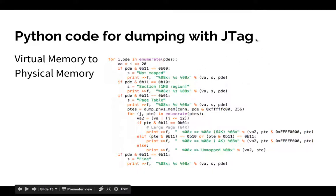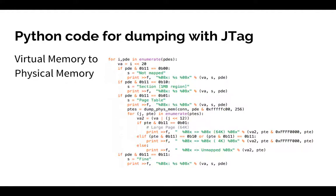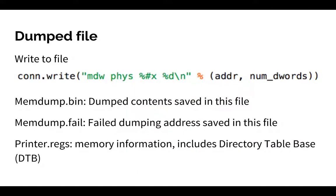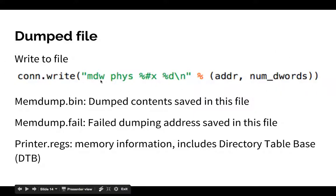The script includes the first level and second level of the page table. This algorithm is actually the same as Volatility's algorithm, because Volatility's address space algorithm also requires virtual-to-physical memory translation. After the translation, we can write the memory to file — the Python code handles the connection, write, and memory dumping of the physical address.